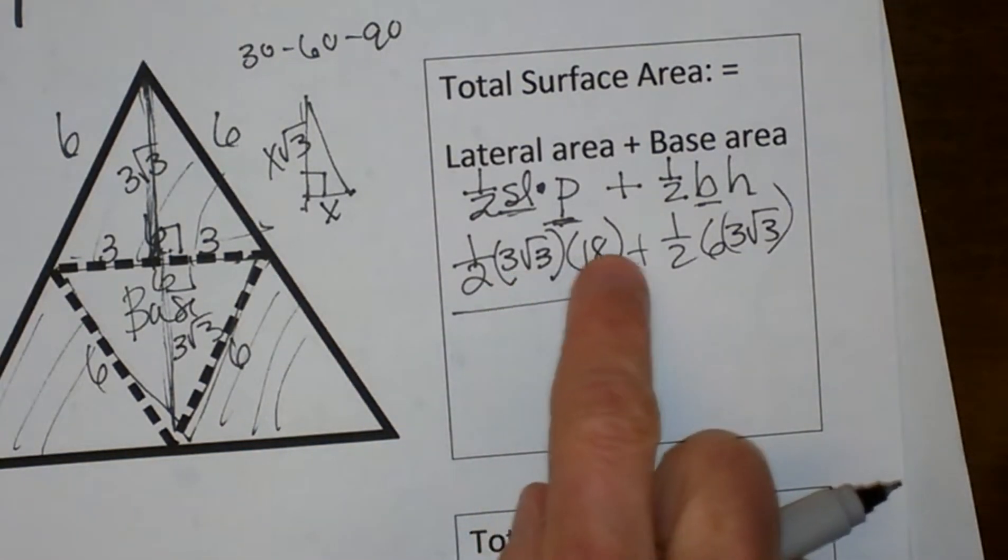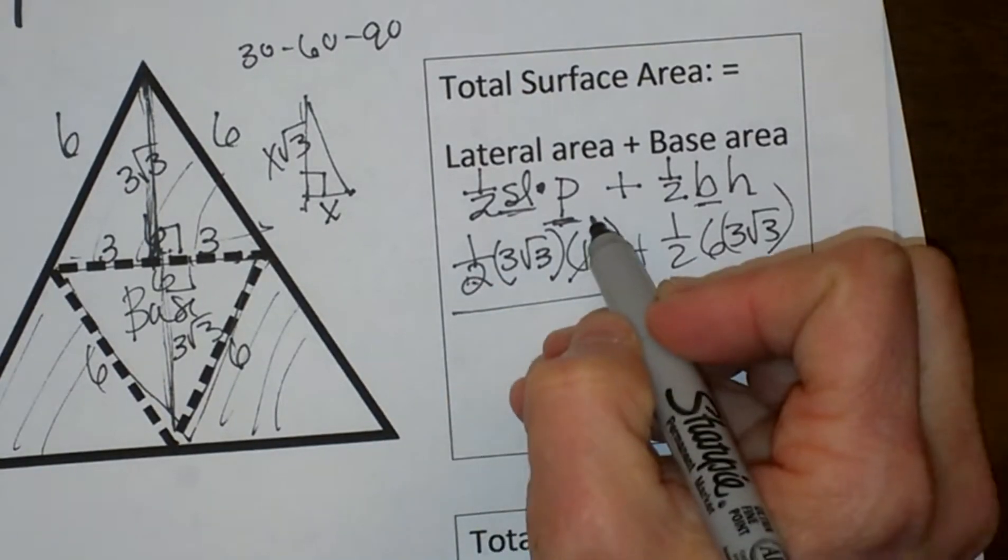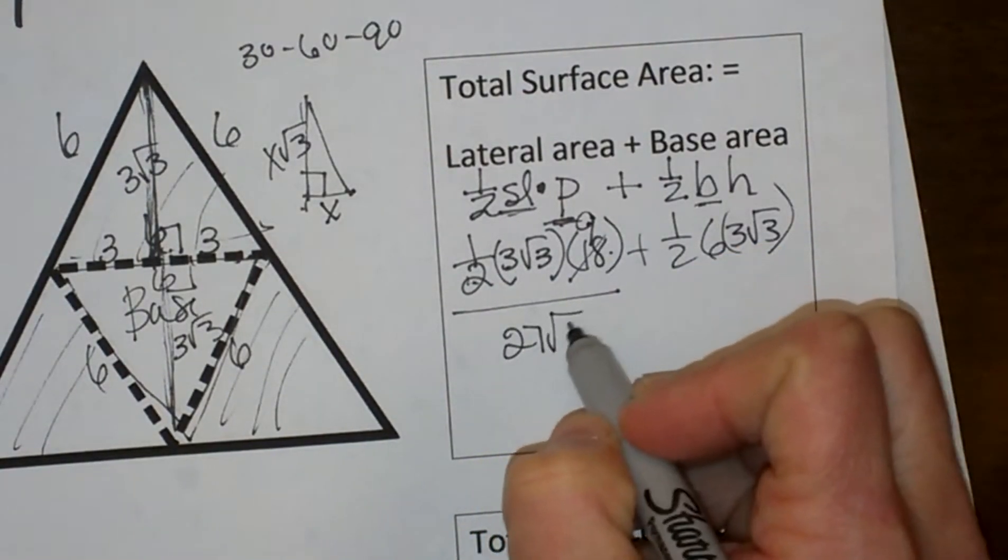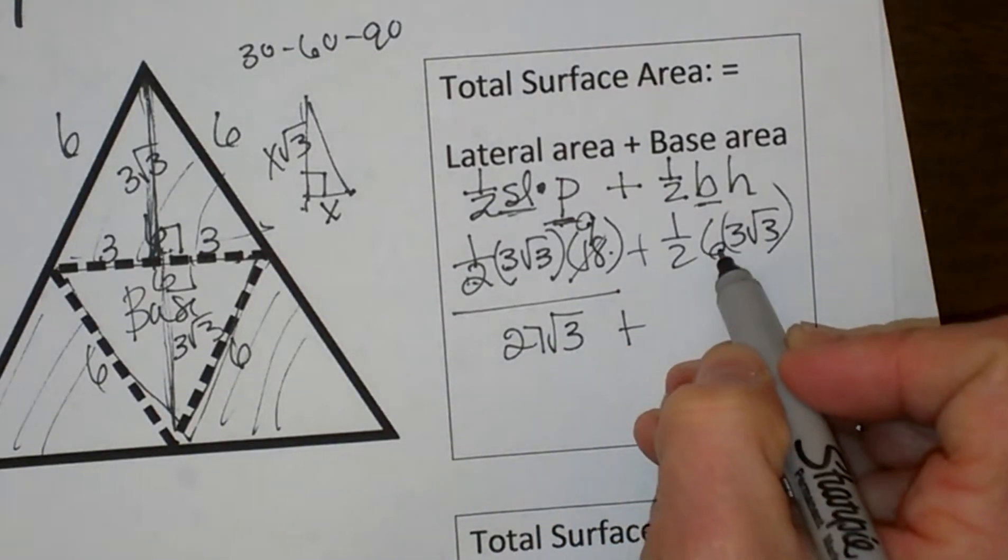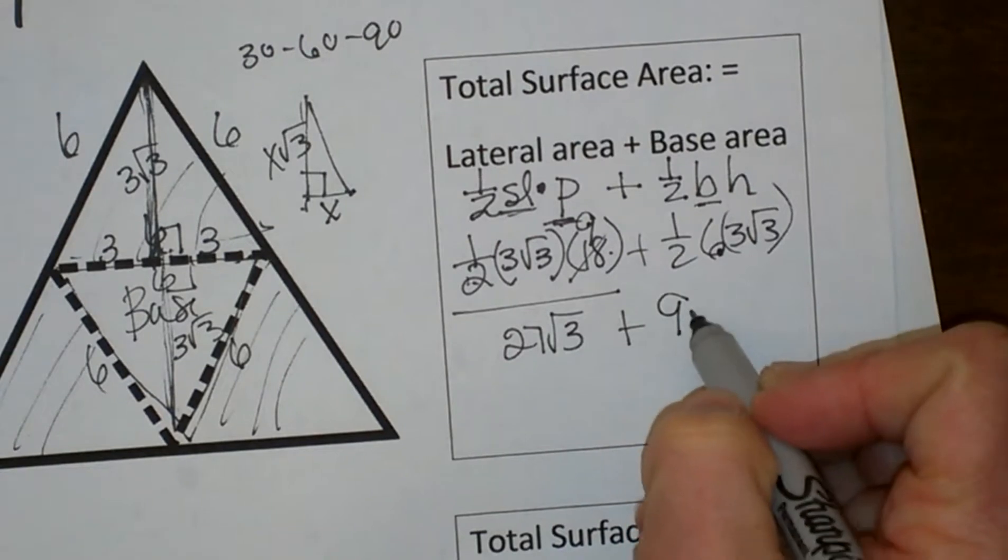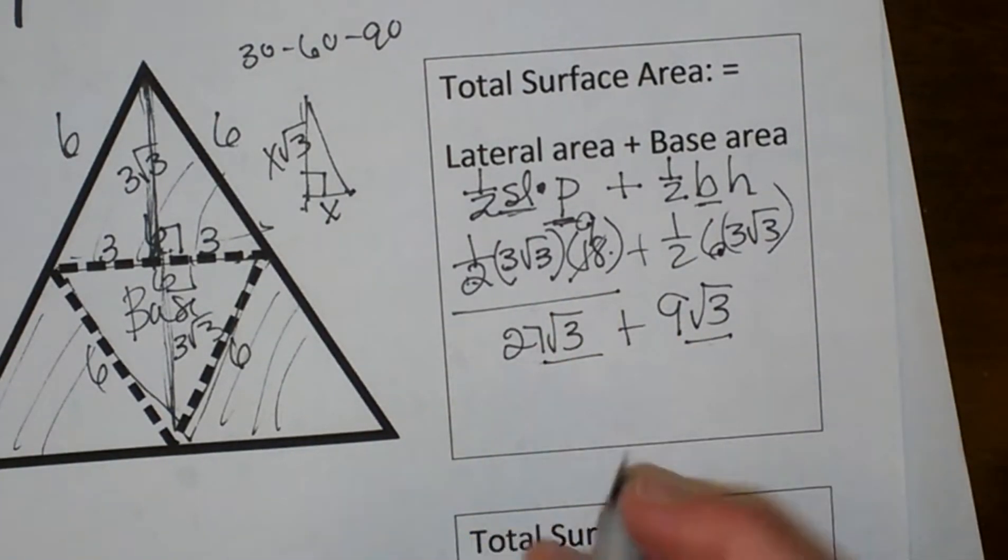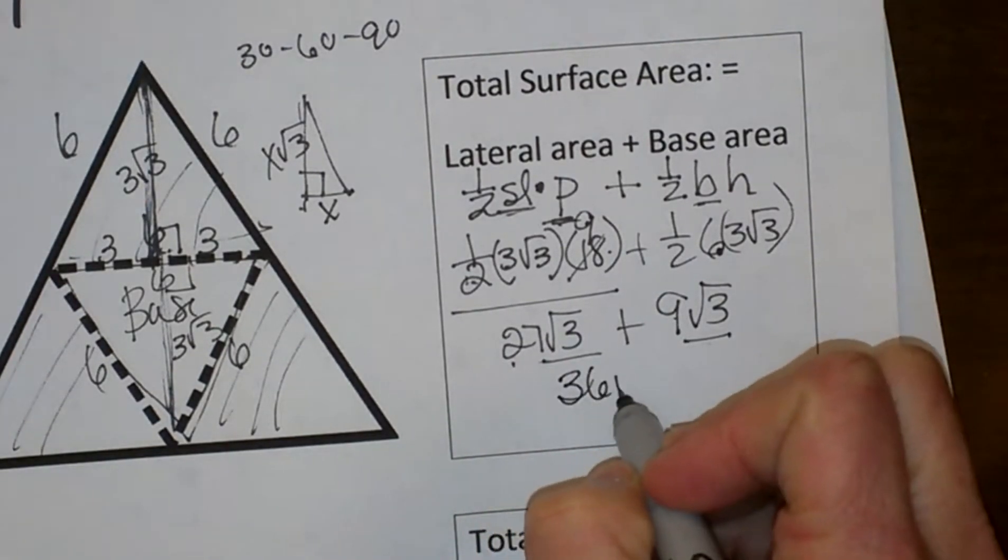And now let's just simplify everything. So 3 times, and I am going to take half of 18 because it is easy. Take half of 18, that is 9. So 3 times 9 is 27 root 3, plus over here half of 6 is 3, 3 times 3 is 9 root 3. Now I have the same radicals, so I can now add those together. 27 plus 9 gives me 36 root 3.